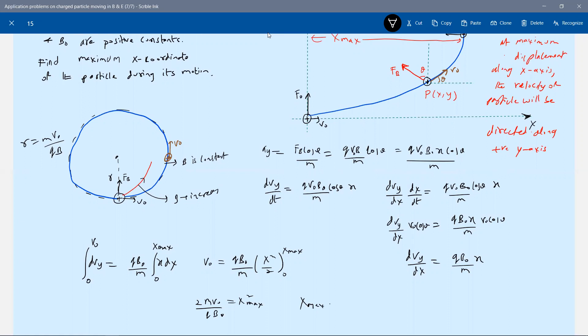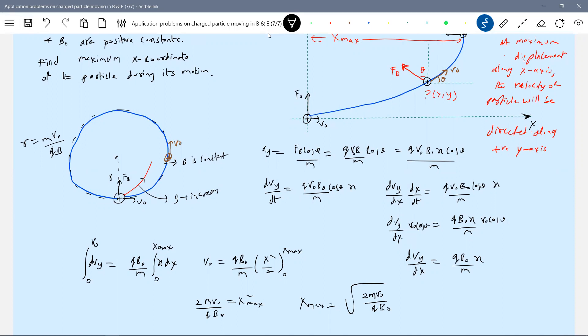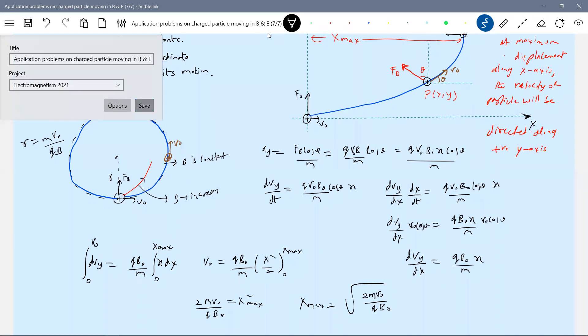So solving this V naught is equal to Q B naught by M. So finally, our answer is 2 M V naught by Q B naught. There's one rare problem. It's there in Resnick. That's why I picked up all possibility of asking as it is.